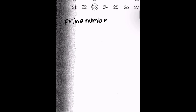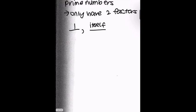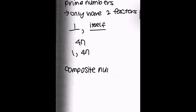Prime numbers, also just known as primes, only have two factors, and those two factors are going to be one and itself. For example, if we have 47, its only factors are one and itself. If a number is not a prime number, we call those composite numbers.